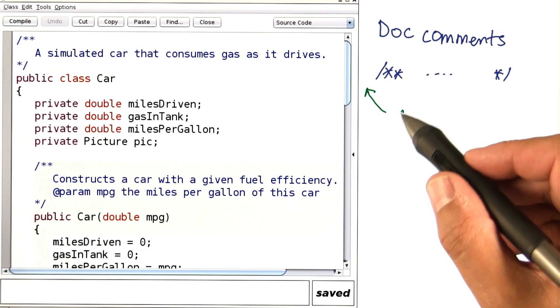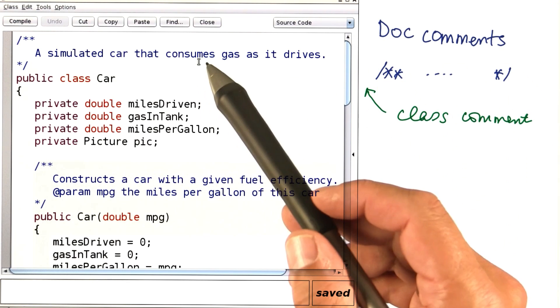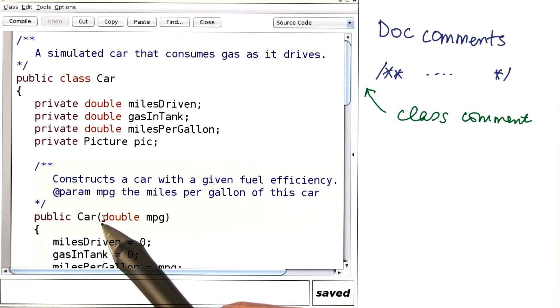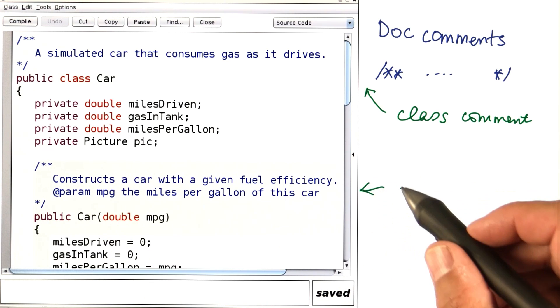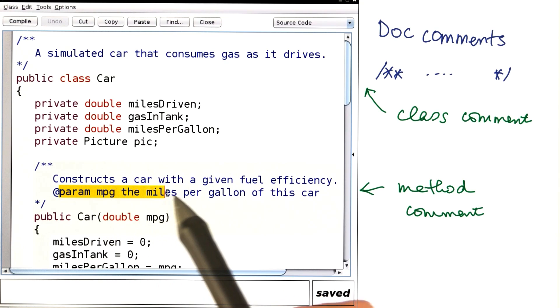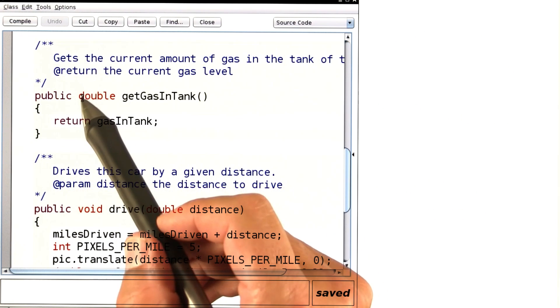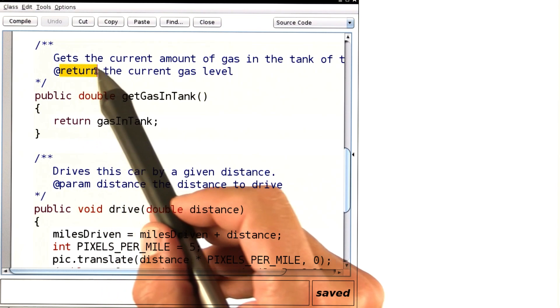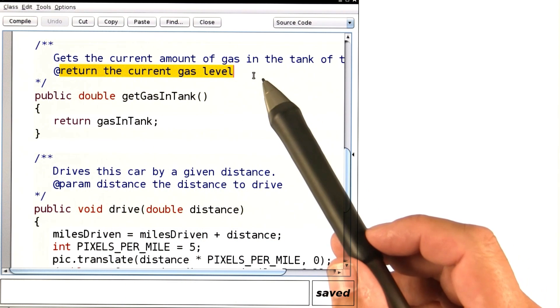At the top of the class, you see a class comment that describes the purpose of the class. At the top of every constructor and of every method, you see a method comment. For every parameter, there is a line explaining what the parameter means. And for those methods that return a value, there is a comment that explains what the method returns.